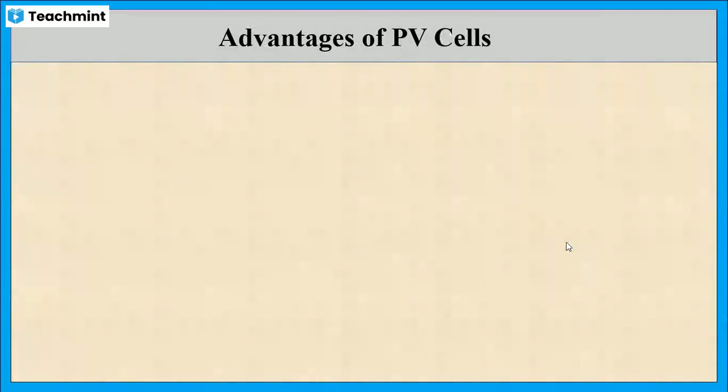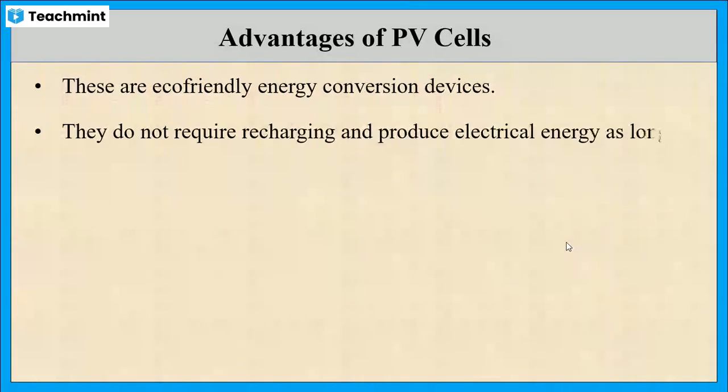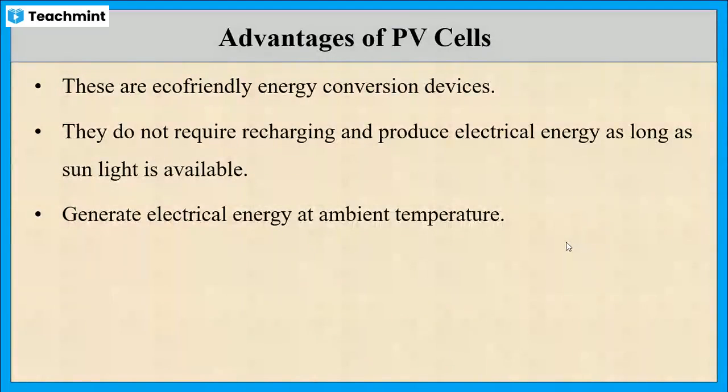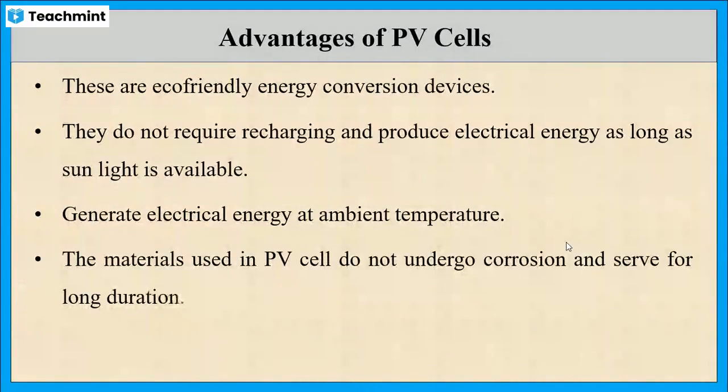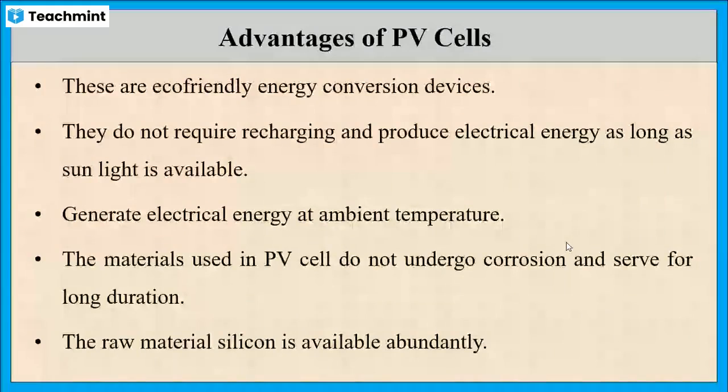Next we will see the advantages of photovoltaic cells. These cells are eco-friendly energy conversion devices. They do not require recharging and produce electrical energy as long as sunlight is available. They generate electrical energy at normal temperature. The material used in the solar cell does not undergo corrosion, hence it serves for a long time. The raw material silicon is available abundantly in nature. These are some of the advantages of PV cells.